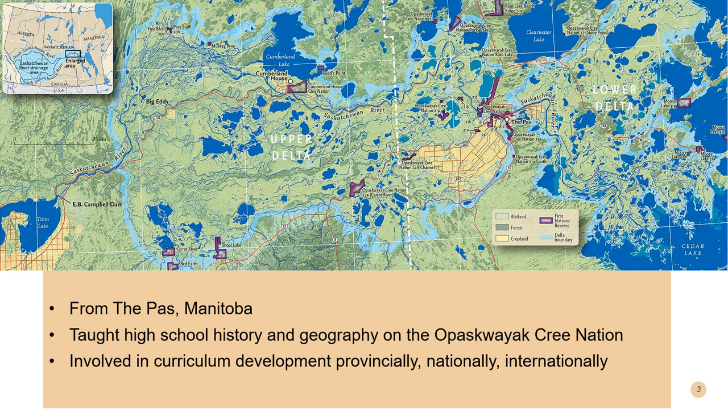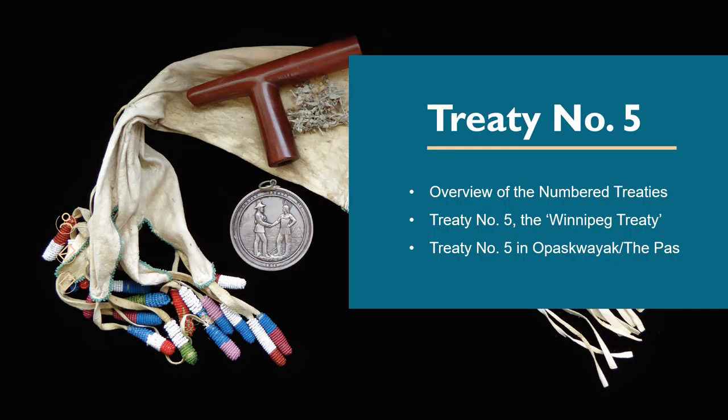Today I'm going to do a bit of a history on Treaty 5 and we're going to focus on three photographs from the Sam Waller Museum collection. We'll do an overview of the numbered treaties for historical context, look specifically at Treaty Number Five — also known as the Winnipeg Treaty — and then look at Treaty Number Five here in Opasquiat Cree Nation and The Pas.